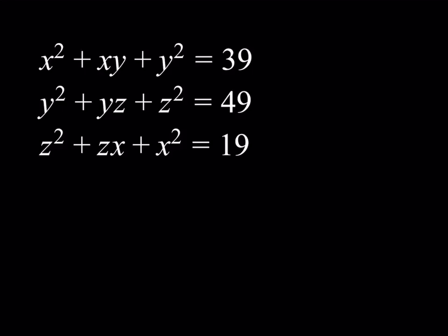This looks like a complicated system, and we're going to solve it using an interesting method. Obviously, there's more than one way to approach this problem — you can have a geometric approach. Please let me know what you think in the comment section down below if you have any alternatives. So here's my approach: I'm going to take each equation and multiply by something, kind of like a conjugate, you know, when we use radicals.